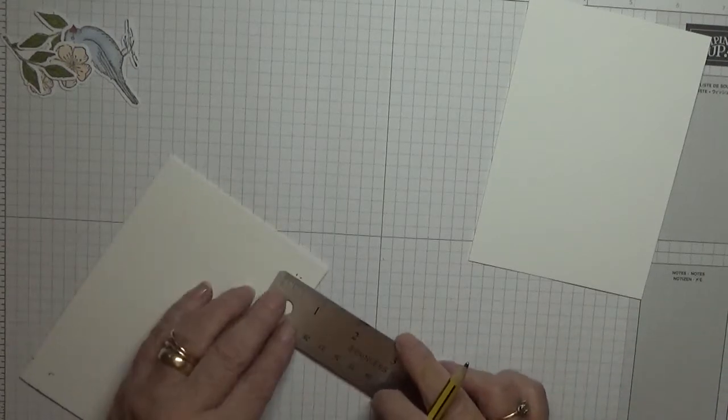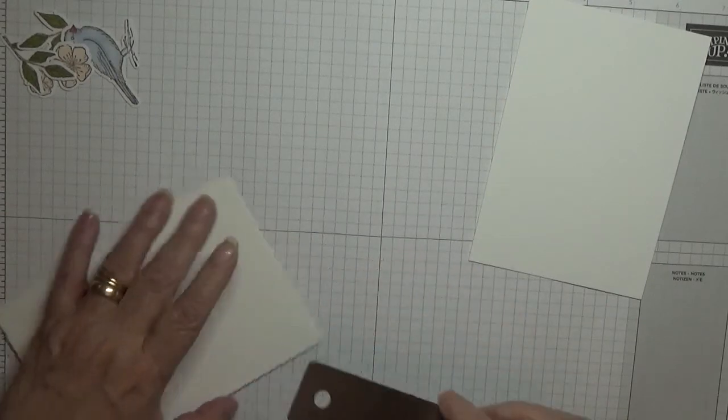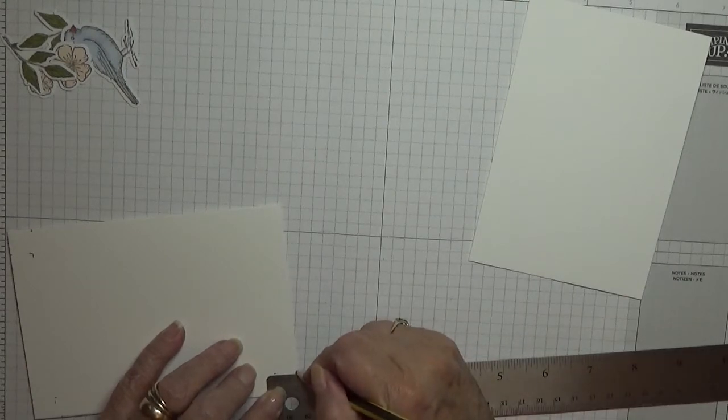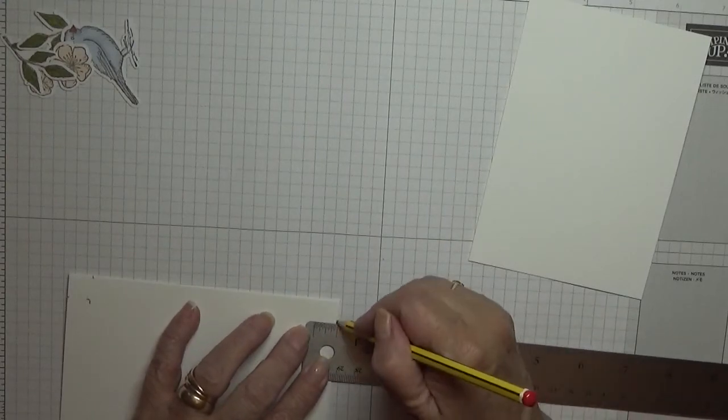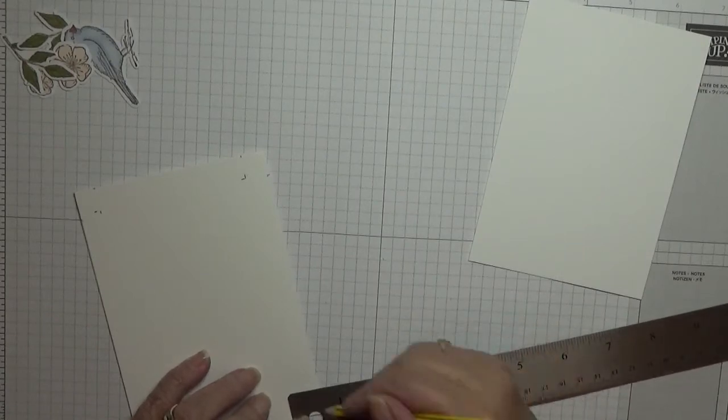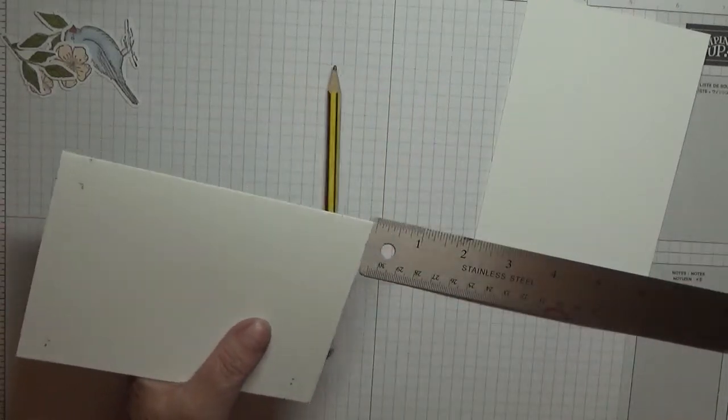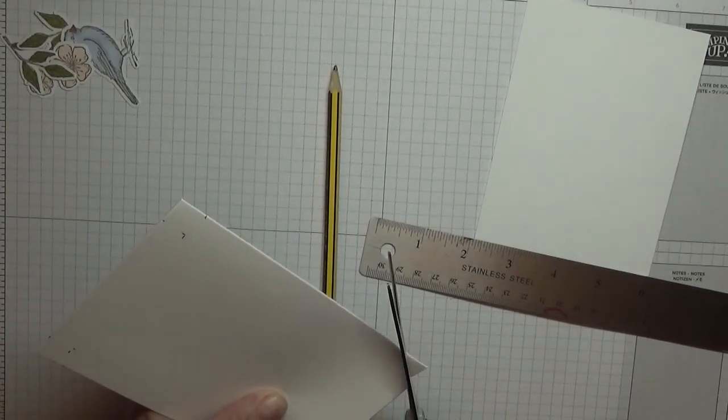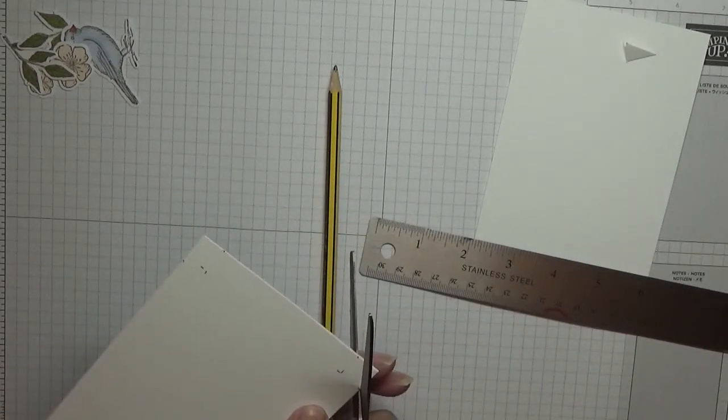Oh, what am I doing? These are supposed to go at the top, you silly person. All right, so marking the edge half an inch, half an inch in, and on all four sides.